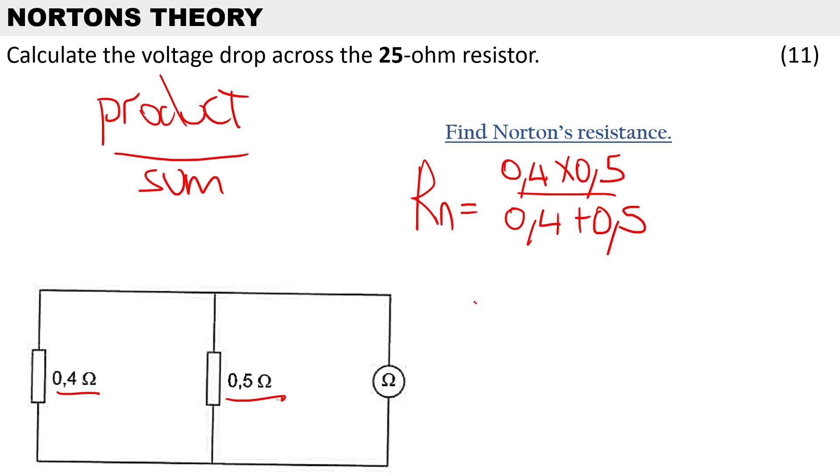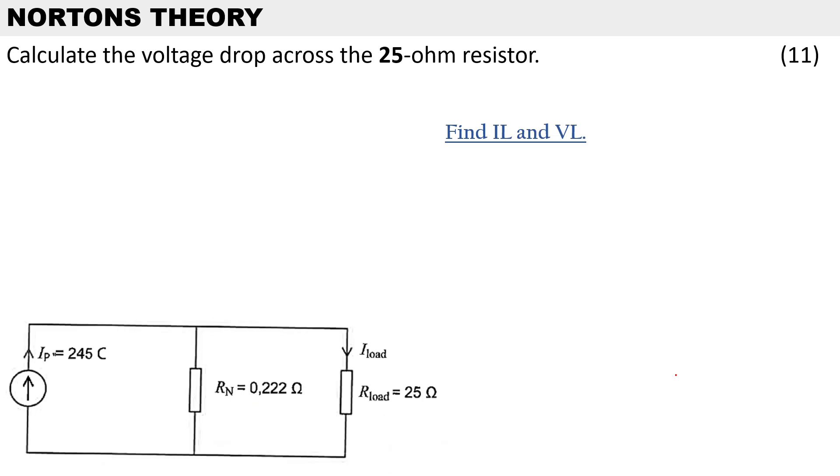The answer we get there is 0.222 ohms. Now that we've got Norton's resistance we can go ahead and calculate the load current and the load voltage. You'll see that I've got Norton's current and Norton's resistance, so we need to calculate IL and then we can calculate the volt drop across that load resistor.